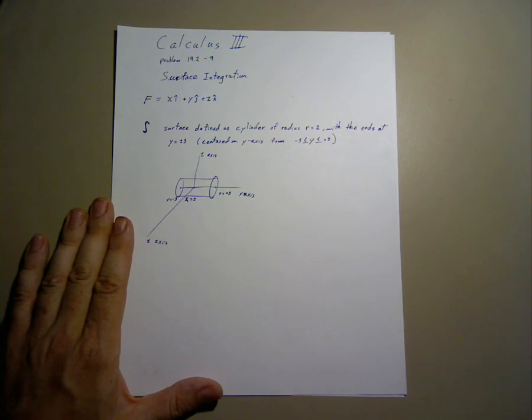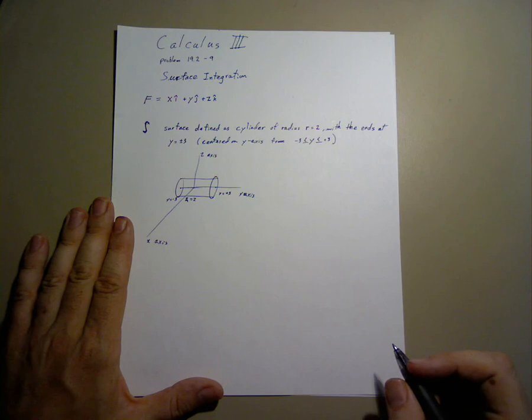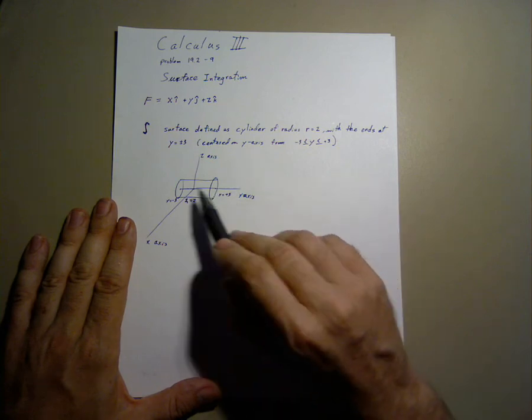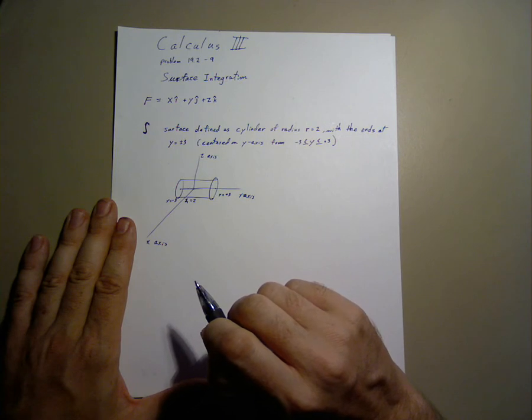Now, one thing that makes these problems much simpler is to pick the correct coordinate system. A coordinate system can make this problem much easier or much harder. We might start off using on the endpoints, a Cartesian system, or we could also do it with a cylindrical system.